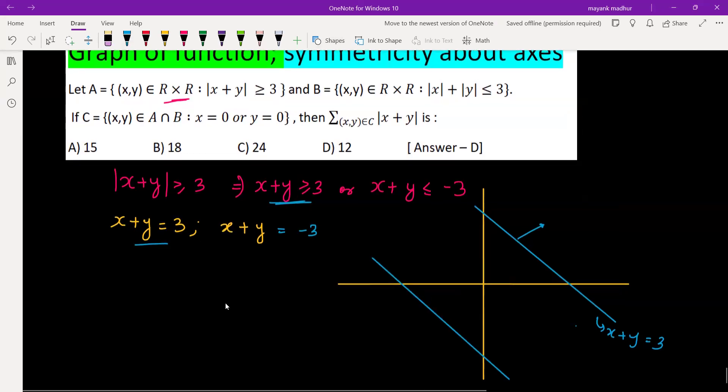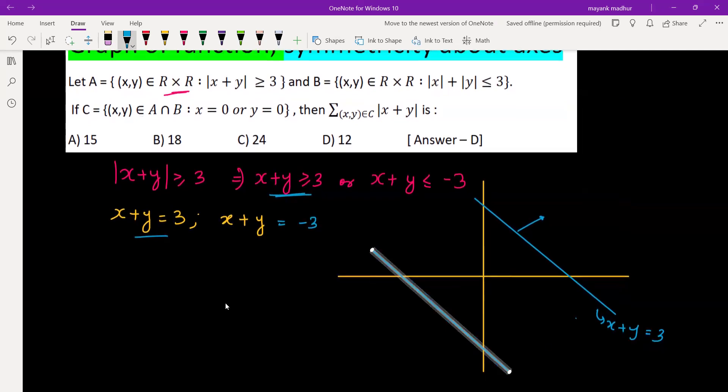x plus y equal to negative 3 will be a line parallel to the previous line, intersecting the x-axis and y-axis at points (−3, 0) and (0, −3). We need this side of the line and this side of the line. So that is done from the first inequality.